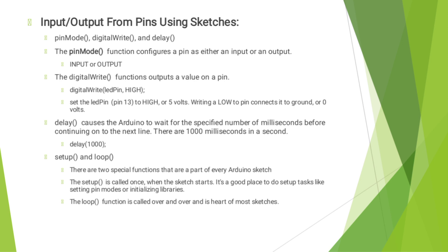Input or output from pins using sketches uses three key functions: pinMode, digitalWrite, and delay. The pinMode function configures a pin as either input or output. The digitalWrite function outputs a value on a pin — for example, digitalWrite(LED_PIN, HIGH) sets LED pin 13 to HIGH or 5V, while LOW connects the pin to ground. The delay function causes the Arduino to wait for the specified number of milliseconds before continuing to the next line; there are 1000 milliseconds in a second, so delay(1000) waits one second. There are two special functions that are part of every Arduino sketch: setup is called once when the sketch starts and is a good place for tasks like setting pin modes or initializing libraries; the loop function is called over and over and is the heart of most sketches.